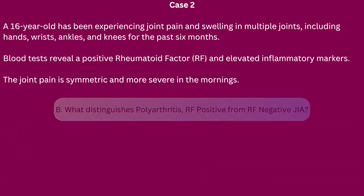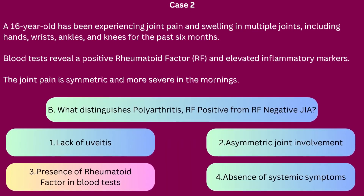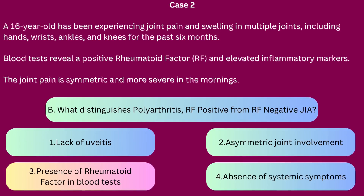The correct answer is 3. The key differentiator between polyarthritis rheumatoid factor positive and negative is the presence of rheumatoid factor in the blood. This is important because rheumatoid factor positive juvenile idiopathic arthritis tends to have a more aggressive course and a higher risk of joint damage and disability. The rheumatoid factor is an antibody not typically found in healthy children and indicates a more severe form of the arthritis.